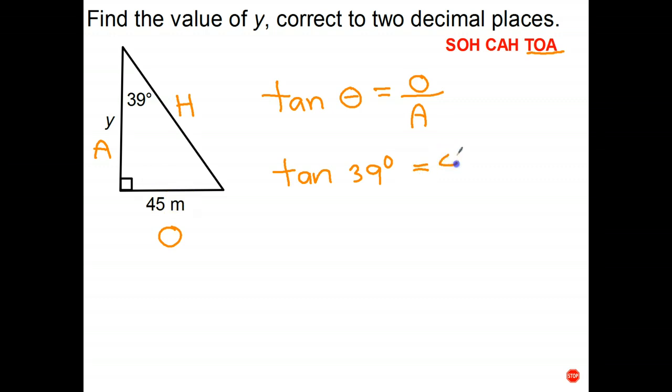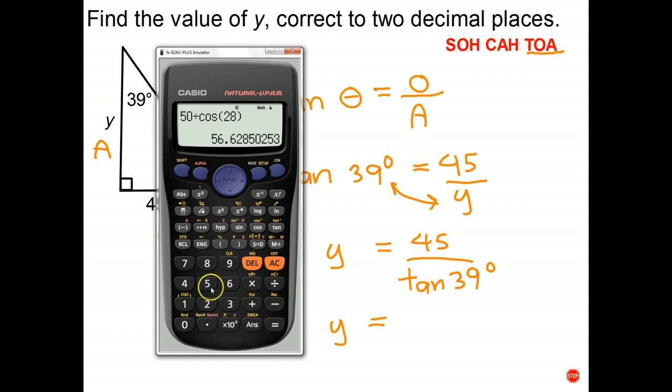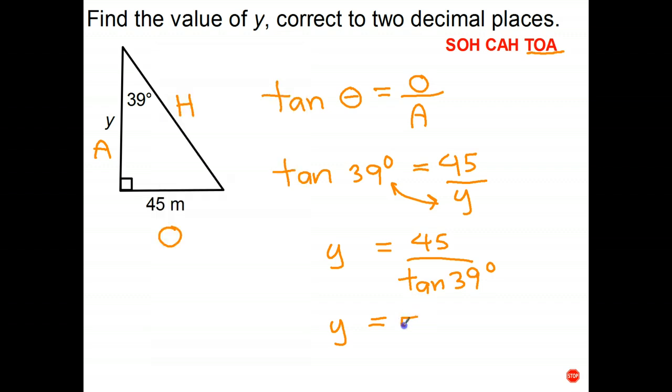In place of the opposite we put 45, and in place of the adjacent, well that's the side we don't know, we write the letter y. Well the y is in the bottom of a fraction, but not a problem. We can use the old swaperoo and rewrite the equation as y equals 45 over tan 39. And we can use the calculator for that. So 45 divide tan 39, and it's 55.57 meters, and there we go.